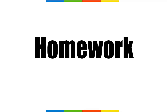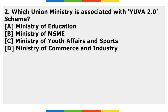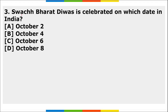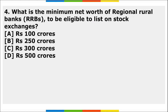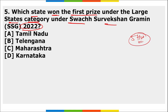Homework questions: 1) What is the name of the first indigenously developed Light Combat Helicopter, and who developed it? 2) Which Union Ministry is associated with the YuVA 2.0 scheme? 3) On which date is Swachh Bharat Divas celebrated in India? 4) What is the minimum net worth for RRBs to be eligible to list on stock exchanges? 5) Which state won the first prize under the large states category in Swachh Survekshan Grameen 2022? Research and answer — no cheating!